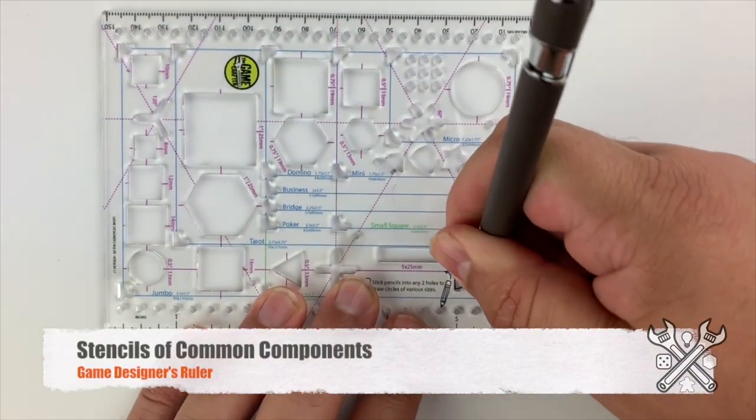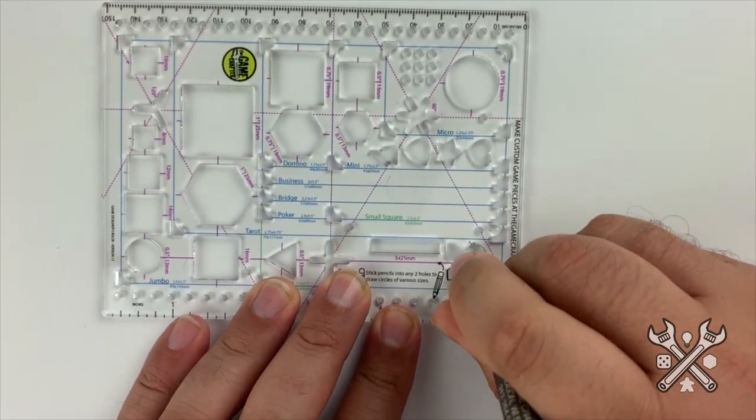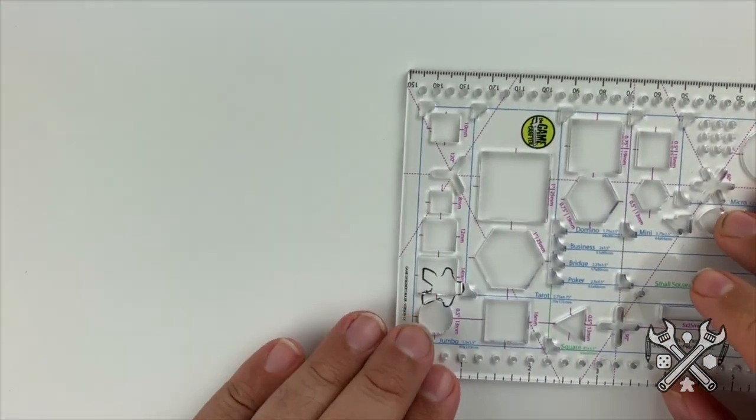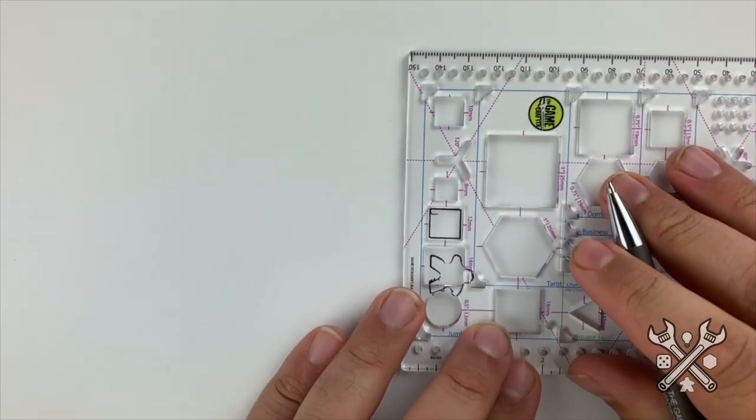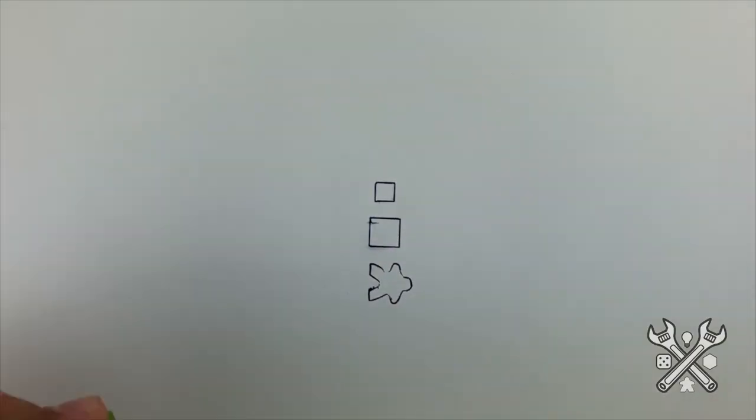It has stencils of common game components such as meeples, cubes, dice, and even Catan roads. These can help you create placement locations on cards and game boards, on prototypes that you're working on at home, or even if you need to create something on the fly at a convention like Protospiel.